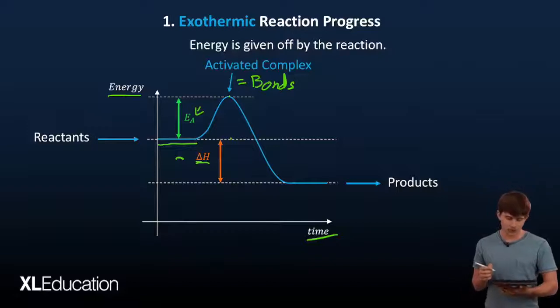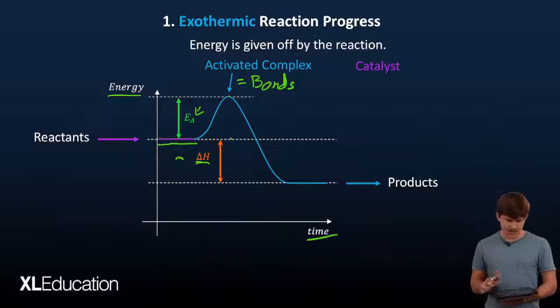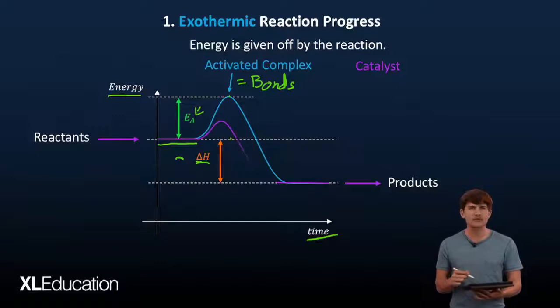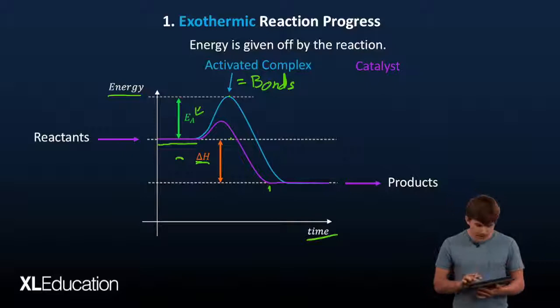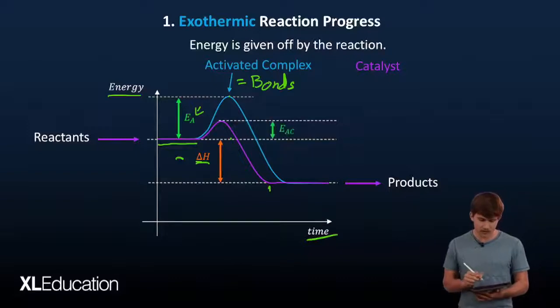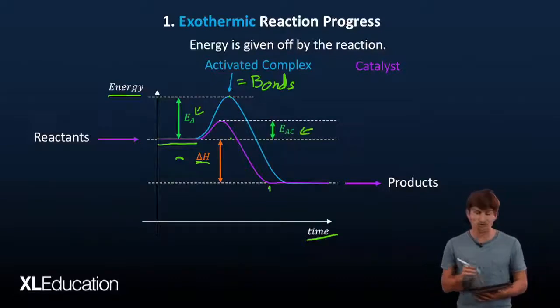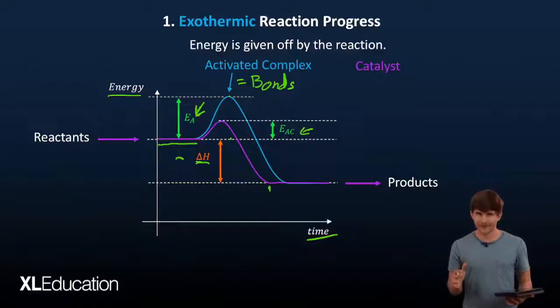Let's quickly see what happens if we introduce a catalyst to this system. A catalyst doesn't influence the energy levels of the reactants or the products, but what it does do is reduce the activation energy. It grows just like a normal one but it peaks far smaller. You can see the dotted line is far smaller - your activation energy due to the catalyst is far smaller than the activation due to the normal reaction.